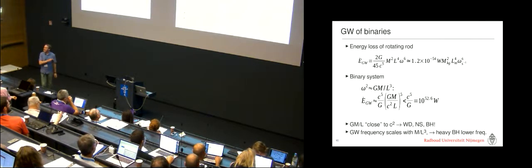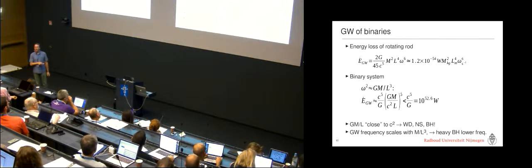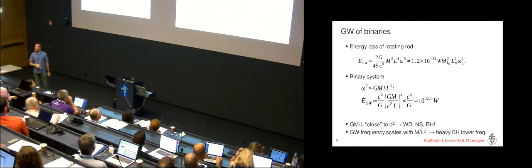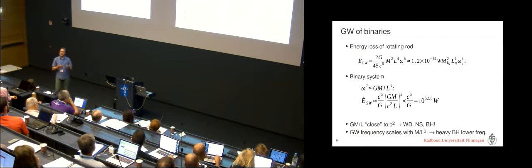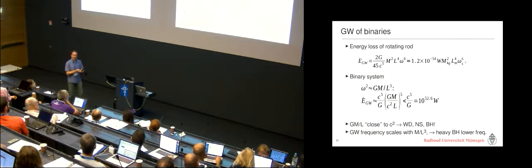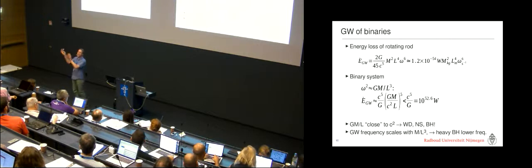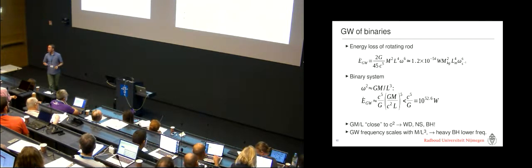The other thing that will be important is that, of course, the frequency of the gravitational wave, this thing here, essentially scales with M over L cubed. And so for black holes, that means that there is a particular frequency that fits with the mass of the black hole. And so massive black holes essentially emit or merge at lower frequencies. And so that's why, one of the reasons we need different detectors.